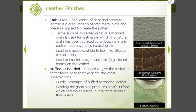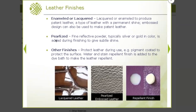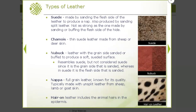Suede fabrics are generally sanded leather. We can also do enameling, lacquering, and pearlized leather — using a fine reflective powder on the surface to give a subtle shine. You can also do water repellent and stain repellent finishes on leather. Suede is done by sanding the flesh side of the leather — split leather is sanded to produce a nap on the surface.